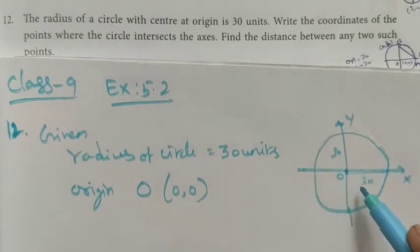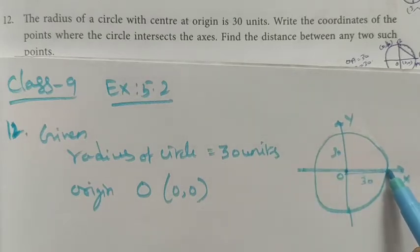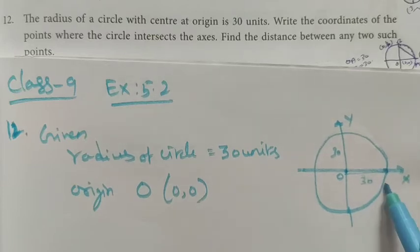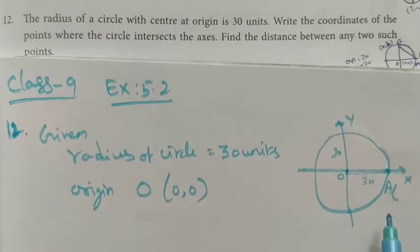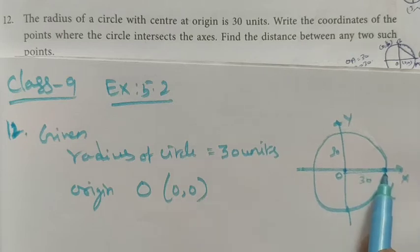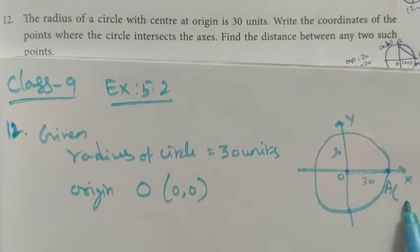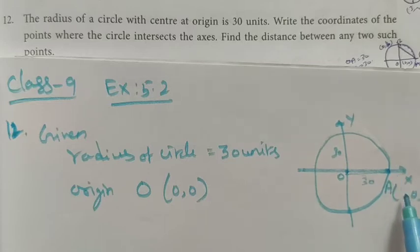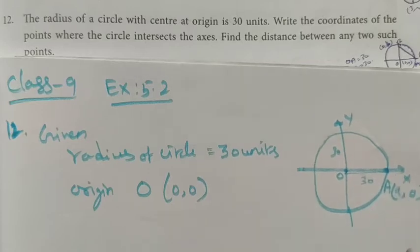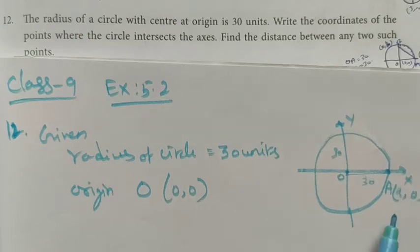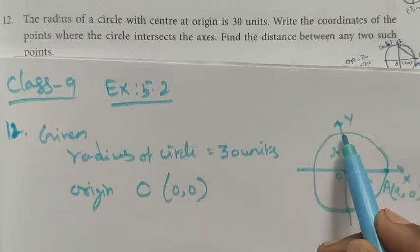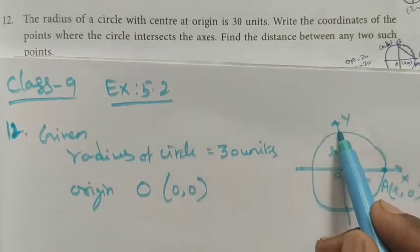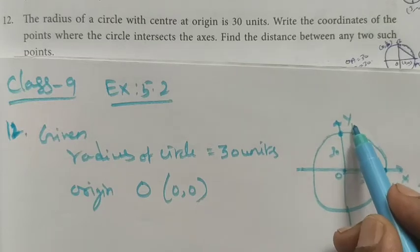Where the circle intersects the axes, we find the points. On the x-axis, y is equal to 0. Point A lies on the x-axis. On the y-axis, x is equal to 0. Let point B be the intersection on the y-axis.